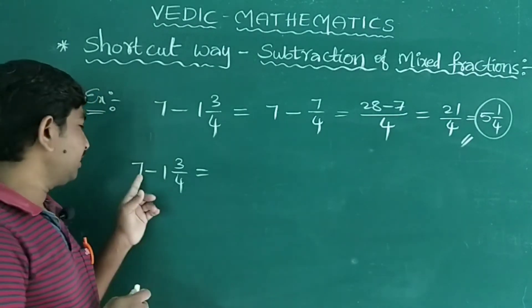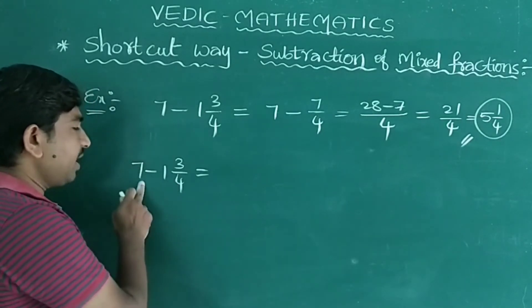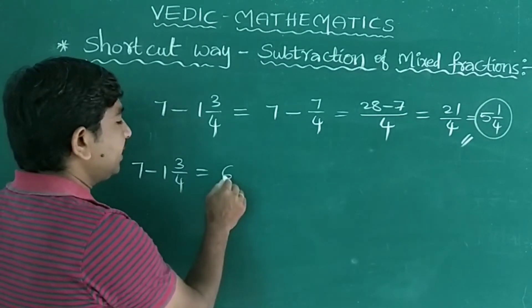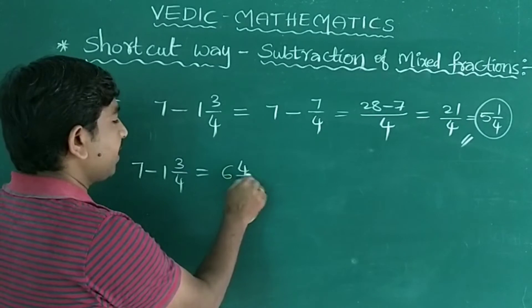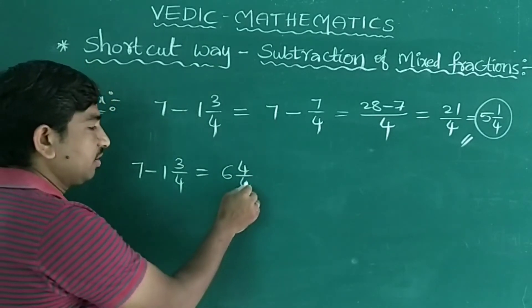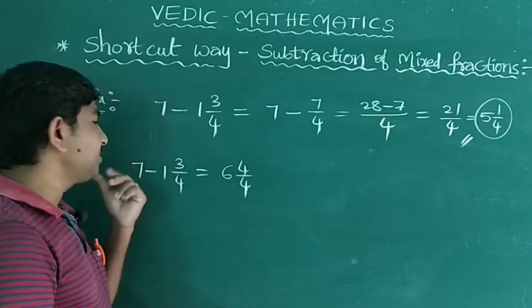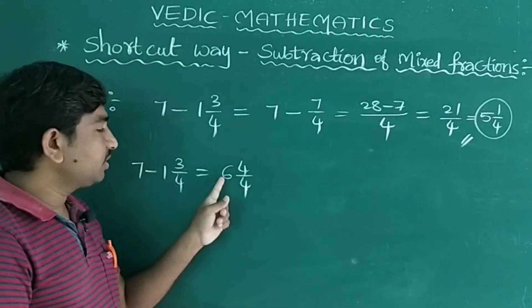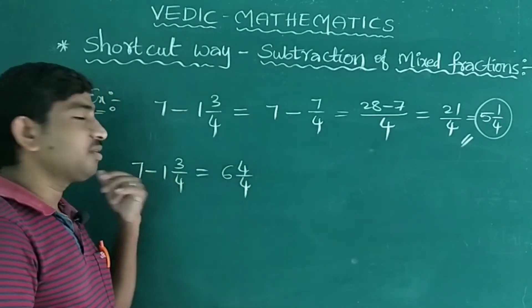Now you can convert the given 7 according to the base denominator. Here, I am writing this 7 as 6 4/4. So if you convert this into the mixed fraction, you will get the same 7 only. How? See, 4 times 6 is 24, 24 plus 4 is 28. 28 by 4 means 7 only.